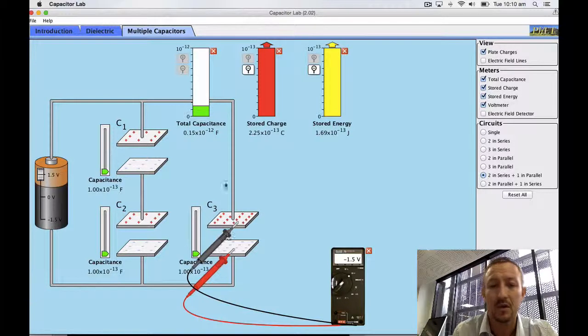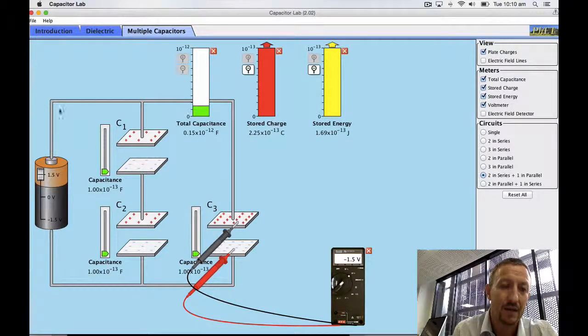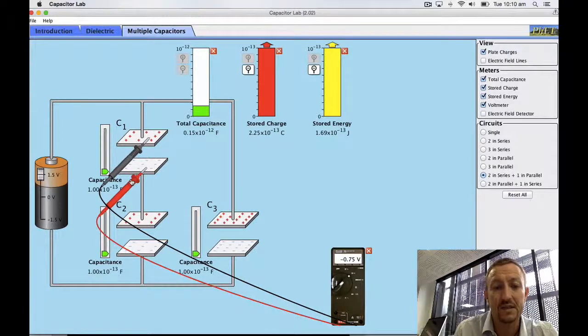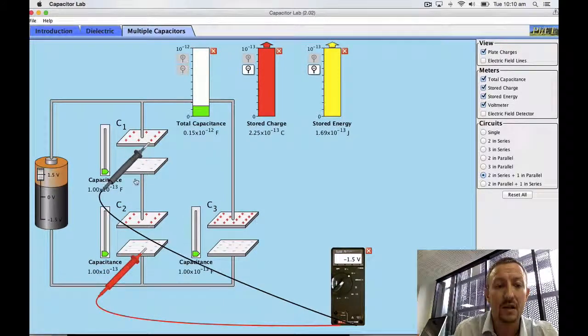That makes sense because basically what I should have is the same energy going through this branch as going through this branch. If I look at what's going on in series we can see I've got 0.75, so the rules still obey.